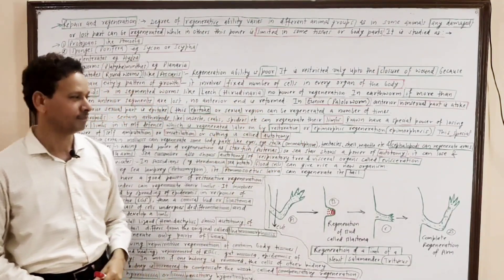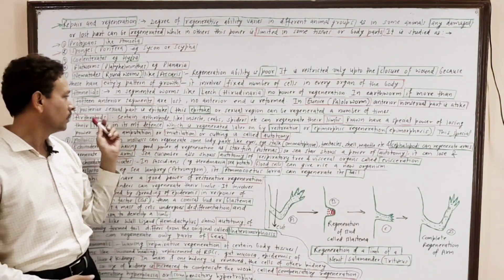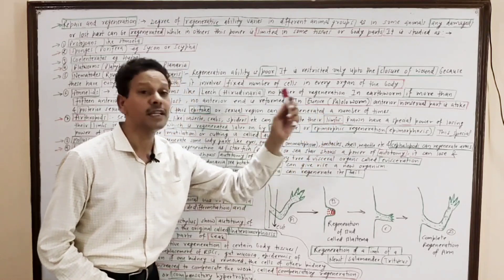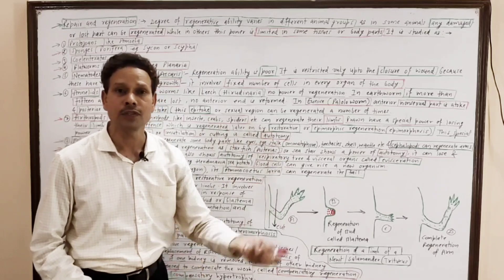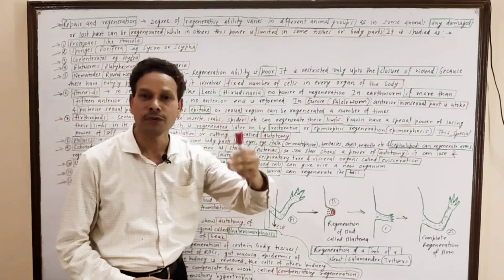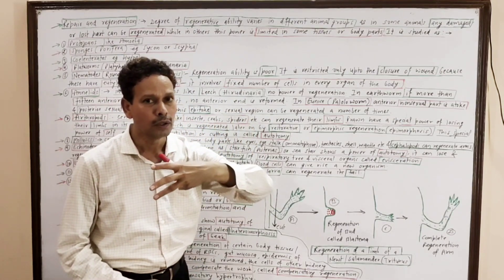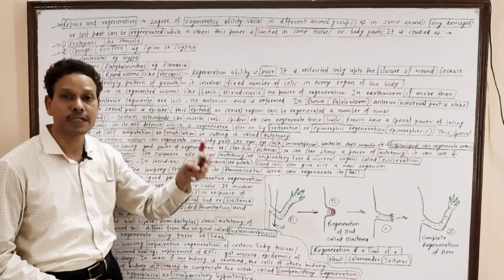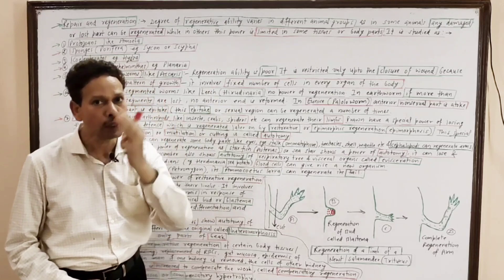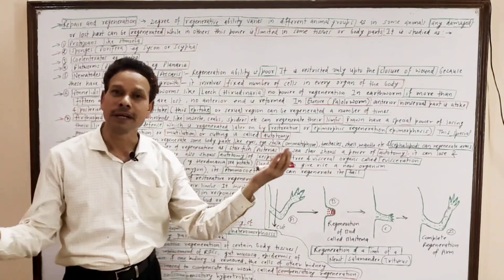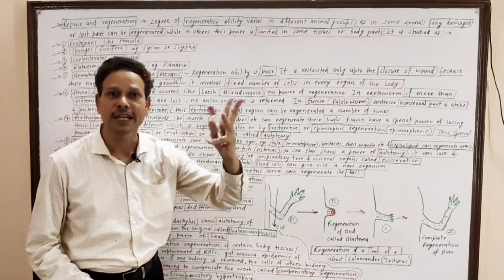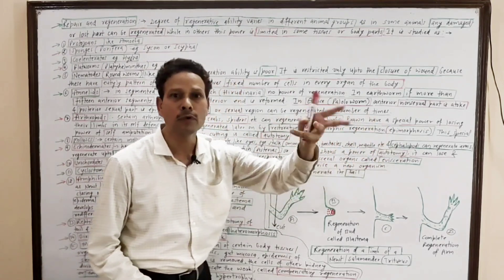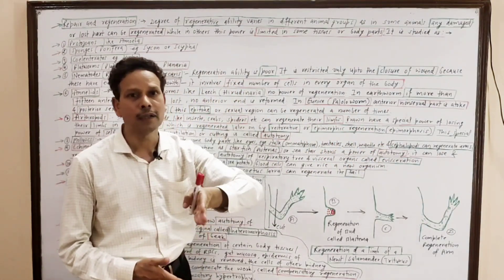In arthropods like insects, crabs, and spiders, there is a remarkable power of regeneration — these organisms can regenerate their body limbs. In case of prawn (Palaemon), lobsters, they have a special power used for self-defense called autotomy — self-cutting or amputation — where the cut body limb can be regenerated later. That kind of regeneration is called restorative or epimorphic regeneration (epimorphosis).